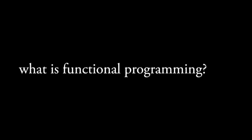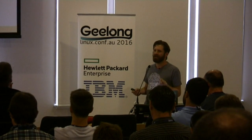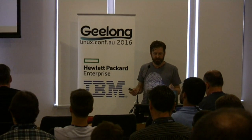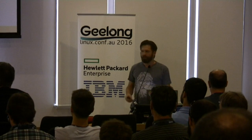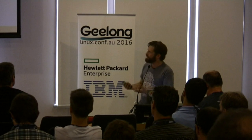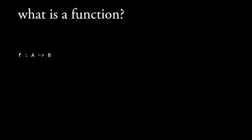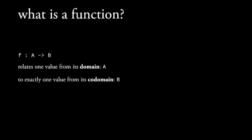We've talked a lot about functional programming today but haven't really provided a definition, so I'm going to provide what I think is a minimal definition. Functional programming is really just programming with functions. Which is funny — but what is actually a function? A function, say f from A to B, relates a value of type A, i.e., in the domain A, to exactly one value from its codomain B.